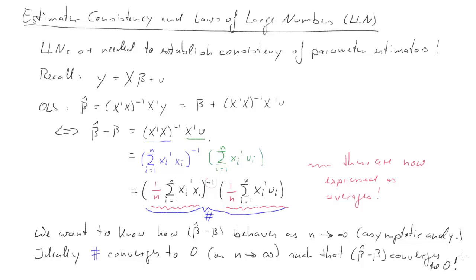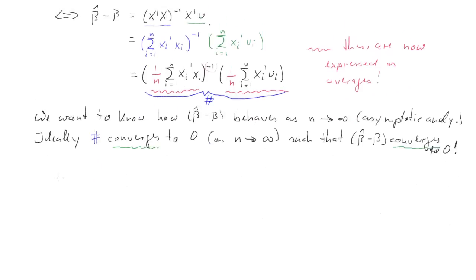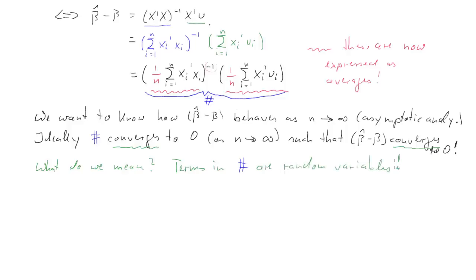Before we continue we need to be clear what we mean by the term 'converge.' We need to recognize that the terms in the blue bit are random variables, so we have to write the definition of convergence knowing that we are talking about random variables converging to something. The concept we'll define is called convergence in probability.